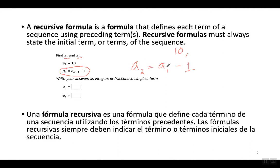Whatever the first term in the sequence is, minus 1. In this case, the first term in the sequence — it says it right here — A1 is 10. So that means you're going to do 10 minus 1 to get the second term in the sequence, which is 9.